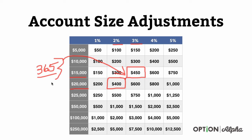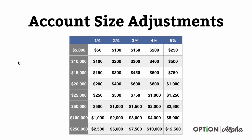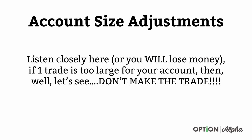That would be an appropriate account-size trade based on your portfolio and how much you want to allocate. I highly suggest if you're starting out, shy away from doing the 4% and 5% type range allocations. Make sure you understand the concepts and how things work before you start increasing your position size.